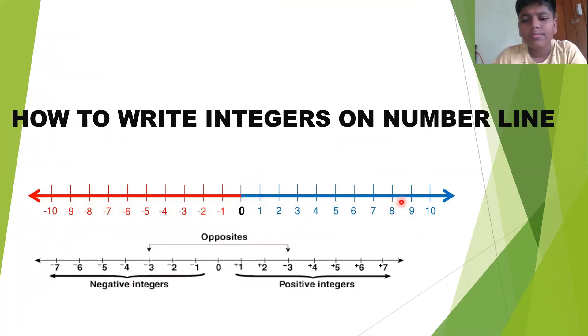These all are positive integers and these are negative integers. Always, negative integers are opposite to positive integers. For example, if we take minus 3 from negative integers, it will be plus 3 on positive integers.